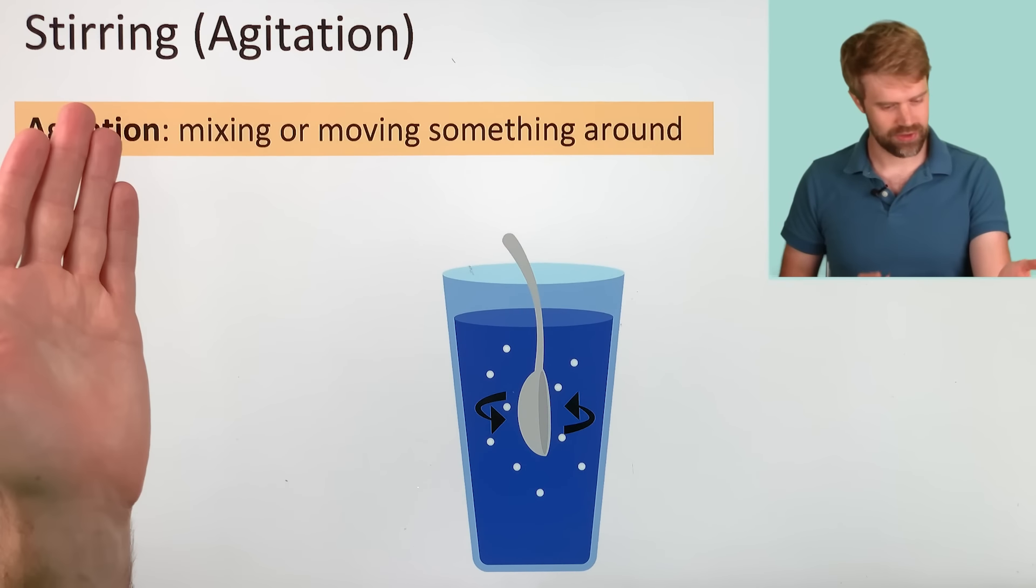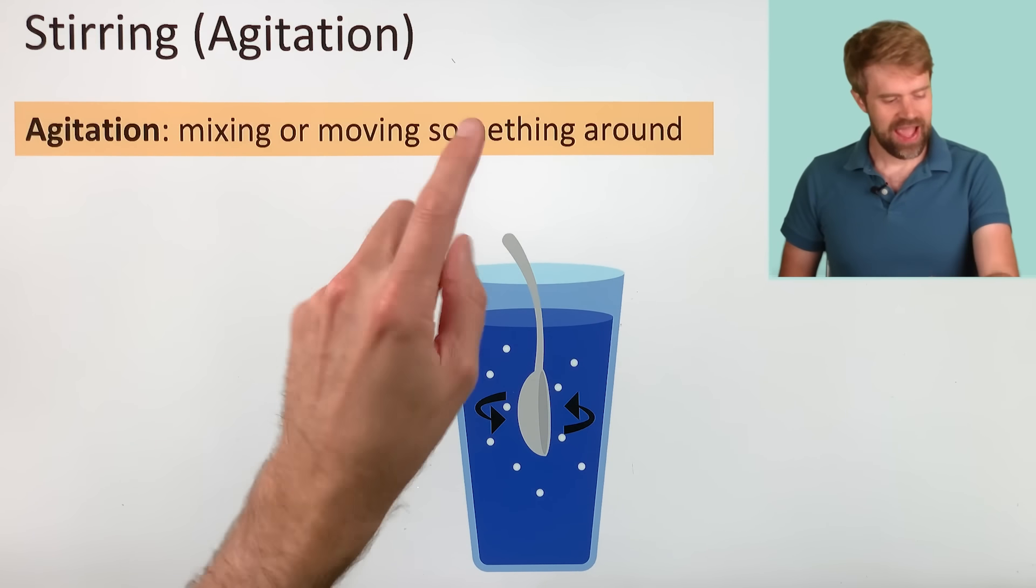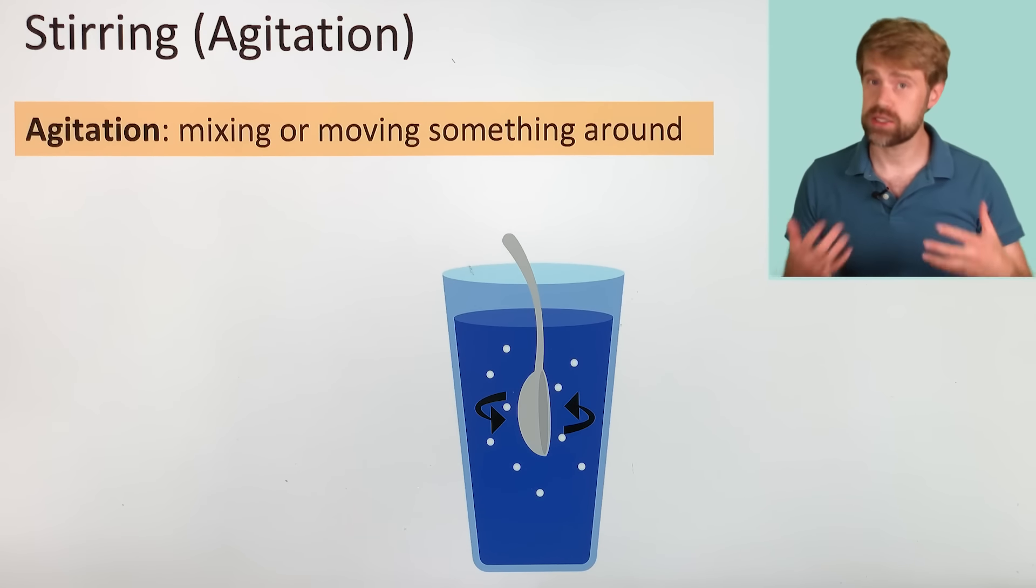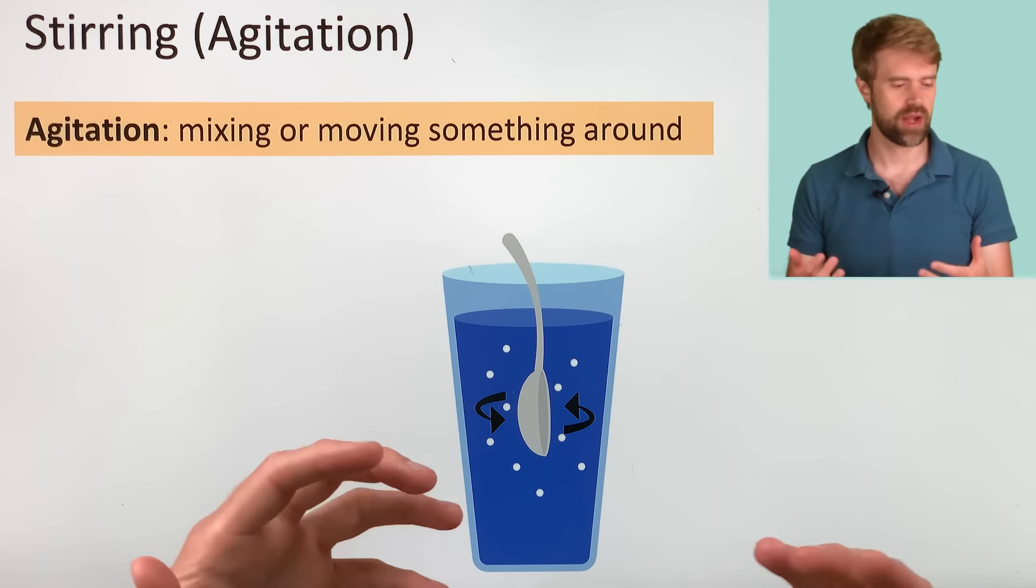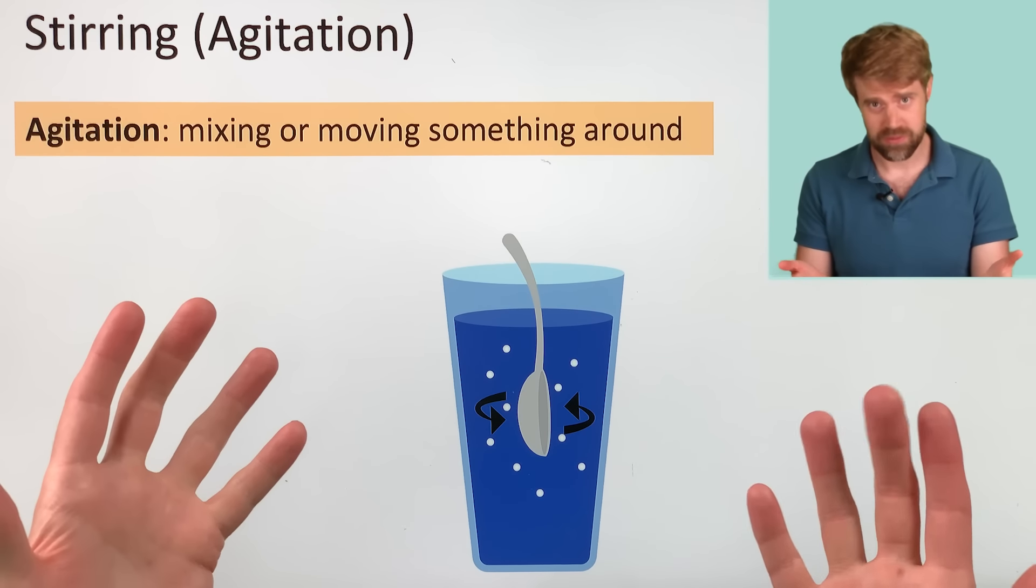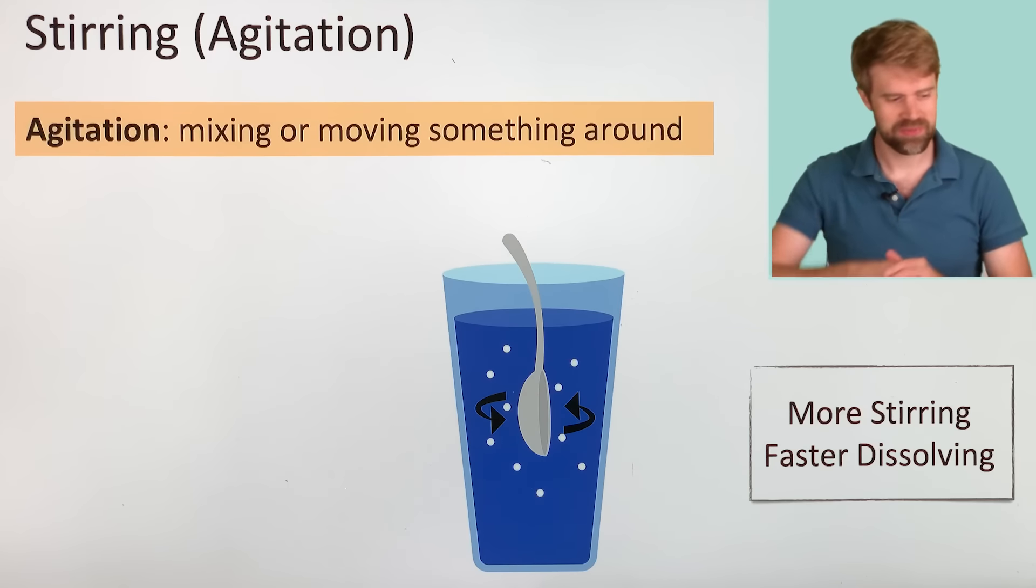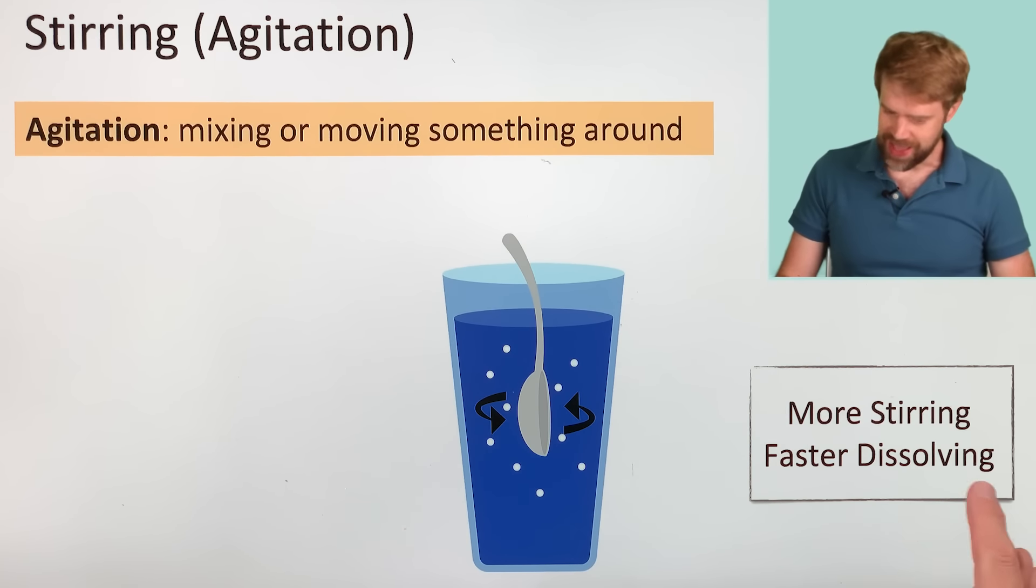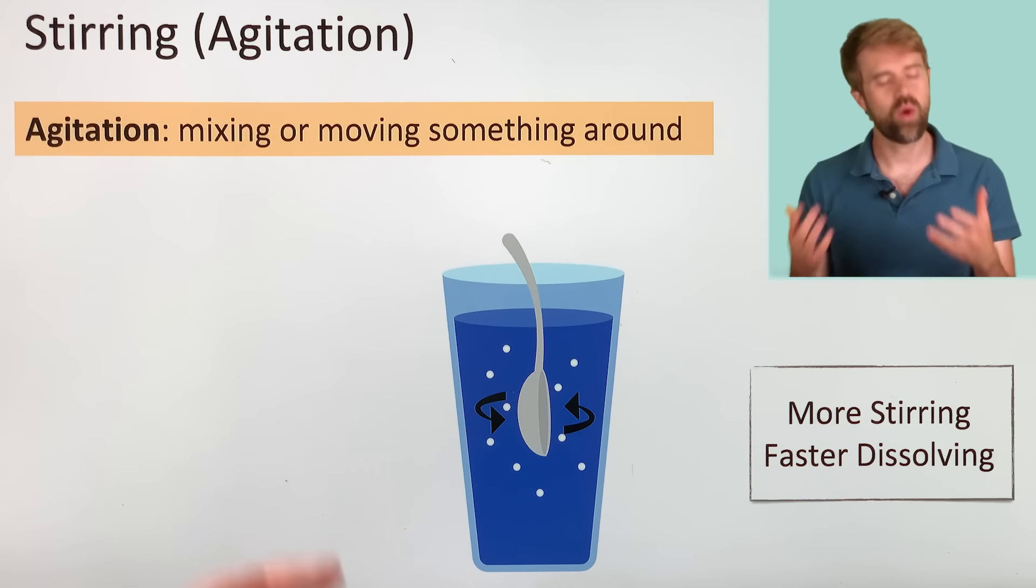Let's move to stirring or agitation. Agitation is a technical word that refers to mixing or moving something around. After you put the sugar into the water, what do you do? You stir it. If you do more stirring, you get faster dissolving. And why is that?